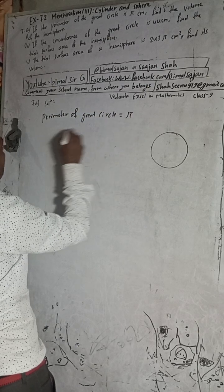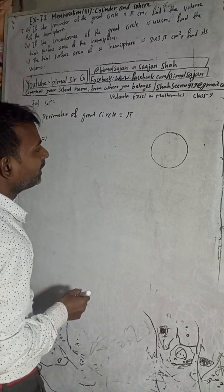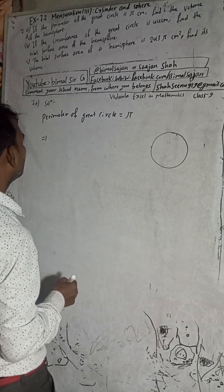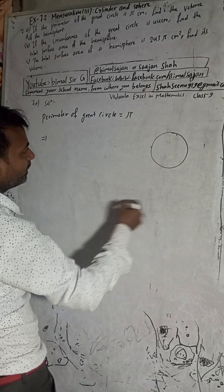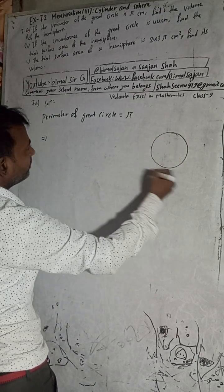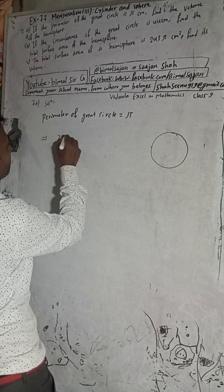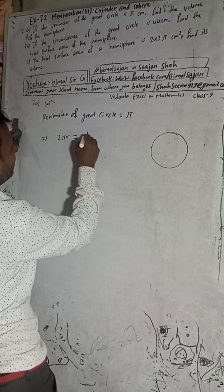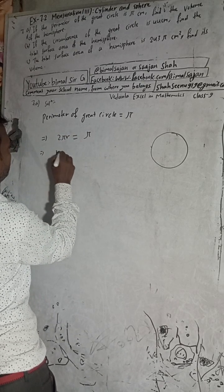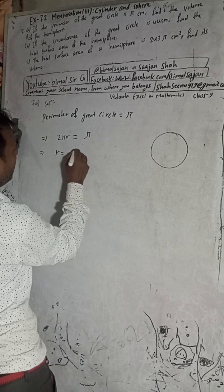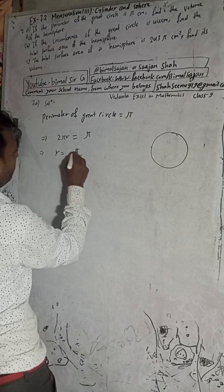The formula for the perimeter, or circumference, of a circle is two pi r. Since the perimeter equals pi, we set two pi r equal to pi and solve for r.